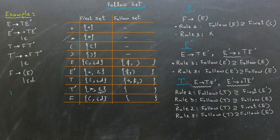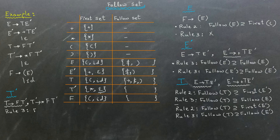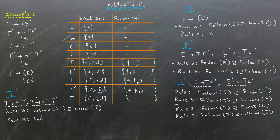Next, let's determine the follow set of T-bar. T-bar appears on the right-hand side of two productions. In the production T produces F T-bar, we apply rule 3 because T-bar is at the end of the production. According to rule 3, we need to include the follow set of T in the follow set of T-bar. In the second production, T-bar produces star F T-bar, rule 3 also applies. However, adding the follow set of T-bar to itself recursively would not introduce any new elements, since a set must contain only unique elements.